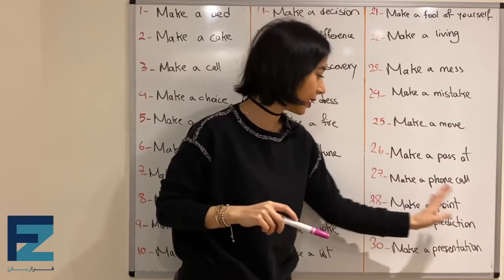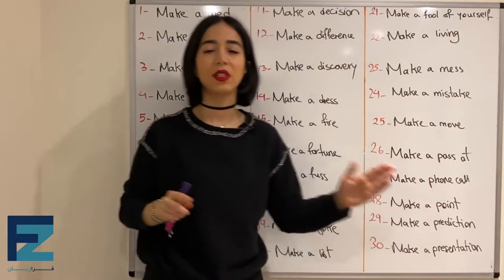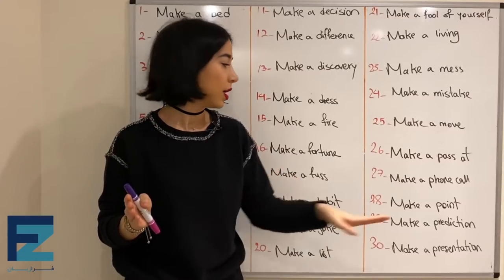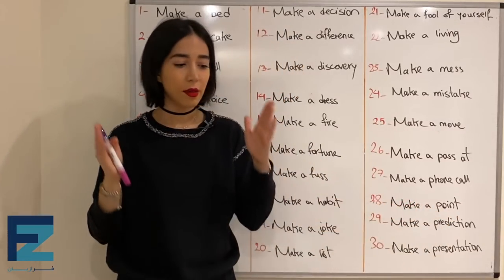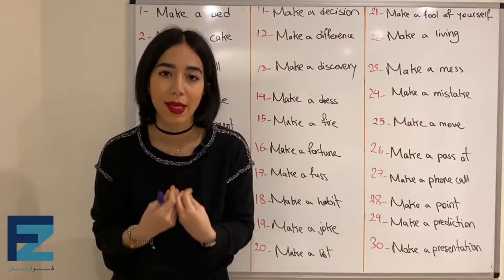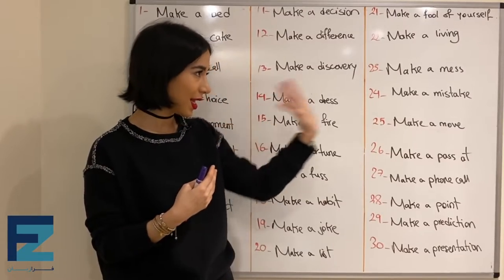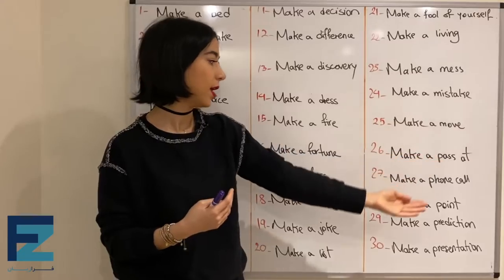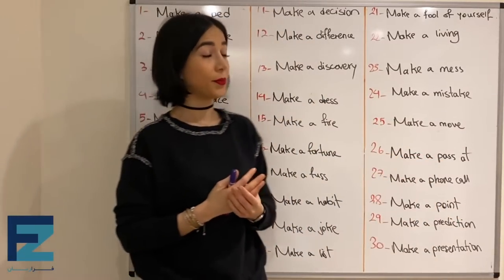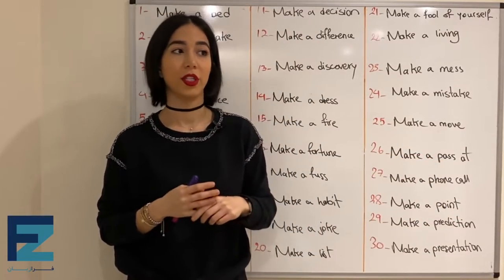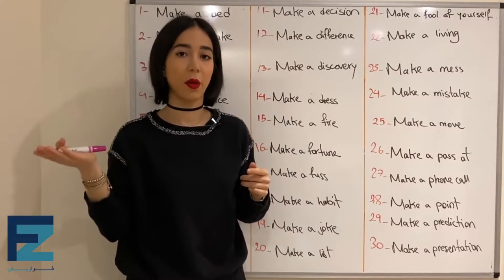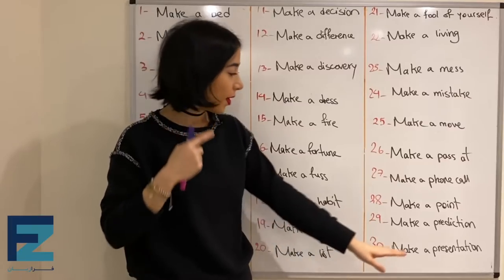Number twenty-eight: make a point. Make a point means to state your opinion about something — نظر خودتو راجع به یه چیزی مشخص کنی. Number twenty-nine: make a prediction — means to predict something. پیش‌بینی کردن.